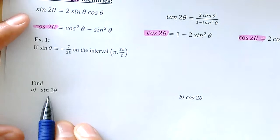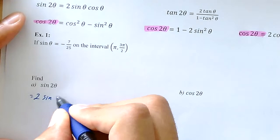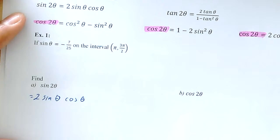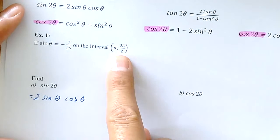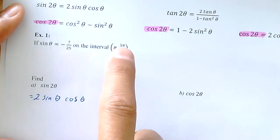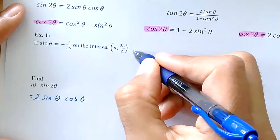To find the sine of 2 theta, I'm going to use my formula: 2 times sine of theta times cosine of theta. From there, I know the sine, but I don't know the cosine. We can figure out the cosine by going back to the given interval.